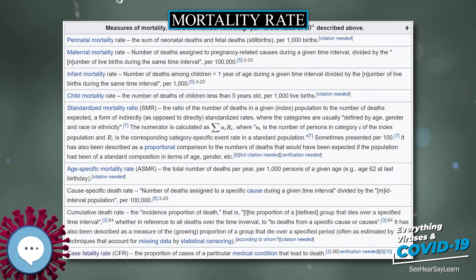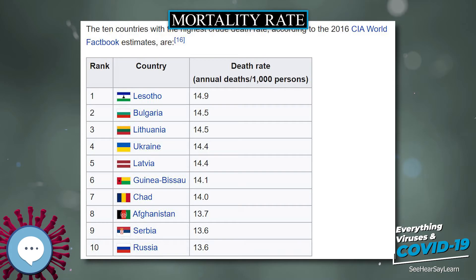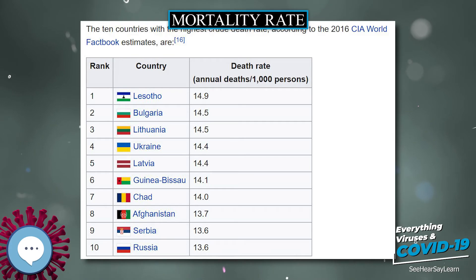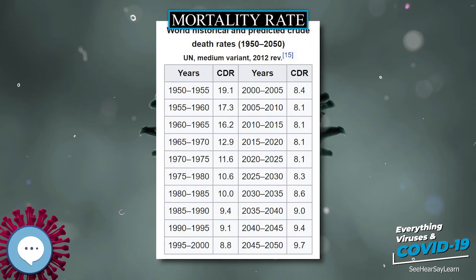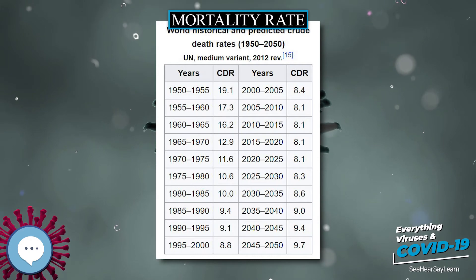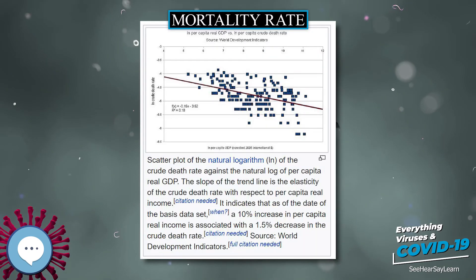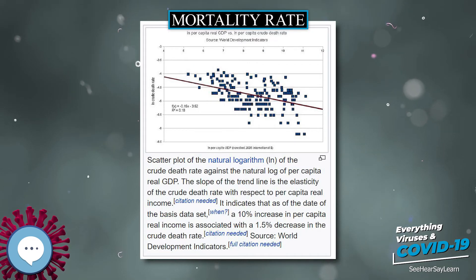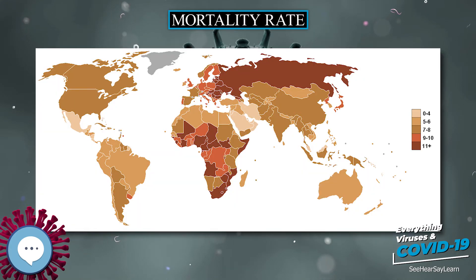In some countries during the 1920s, a stillbirth was defined as a birth of at least 20 weeks gestation in which the child shows no evidence of life after complete birth. In most countries, however, a stillbirth was defined as the birth of a fetus after 28 weeks of pregnancy in which pulmonary respiration does not occur.